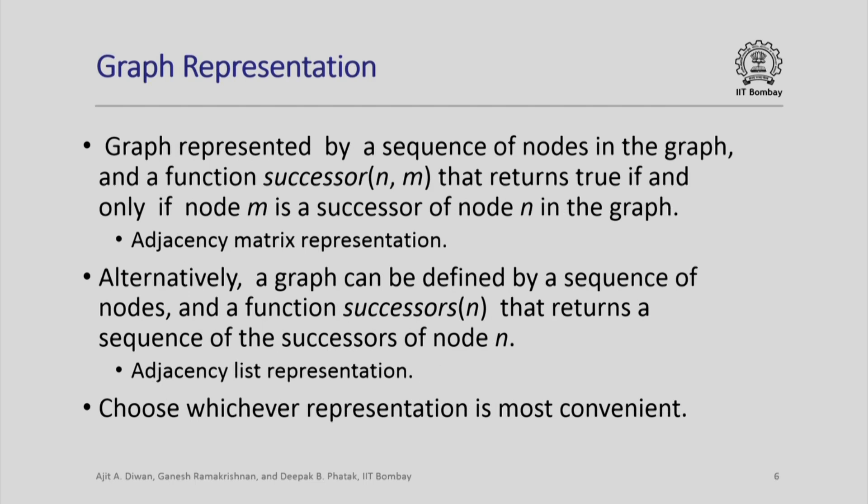We will look at how a graph is represented. A graph is defined by a sequence of nodes and a function called successor(n, m) that returns true if and only if node m is a successor of node n in the graph. So we have a sequence of nodes representing what nodes are in the graph, and a single function successor that tells us whether a given node m is a successor of node n or not. This is also called the adjacency matrix representation of a graph, because for every pair of nodes it tells us whether one is a successor of the other.